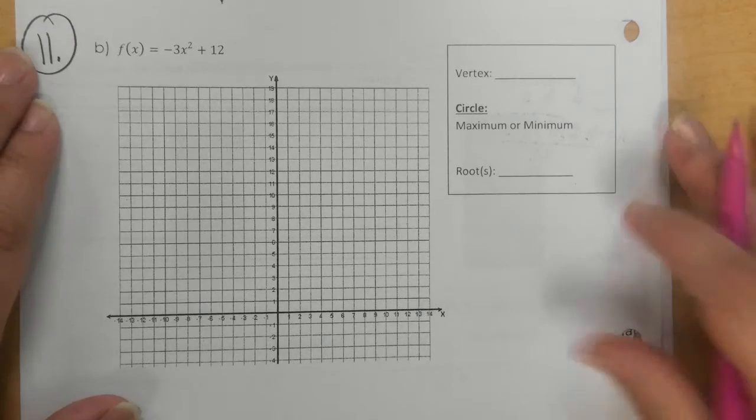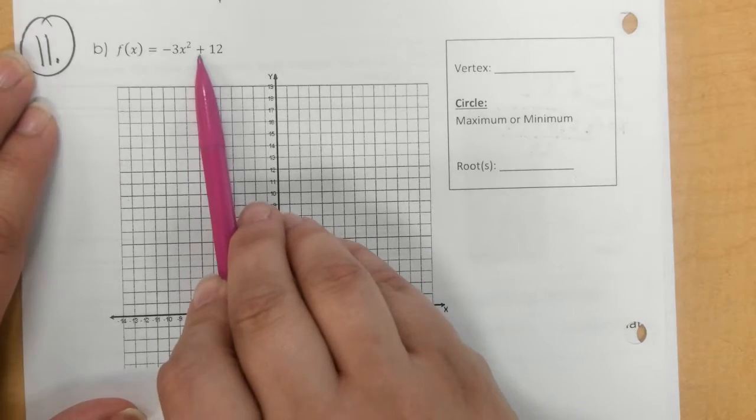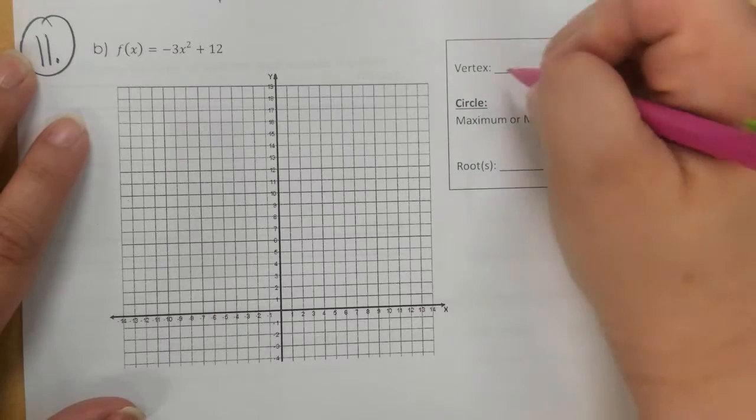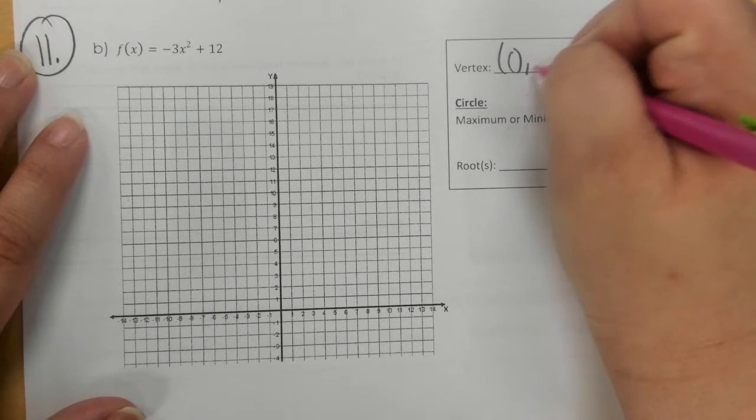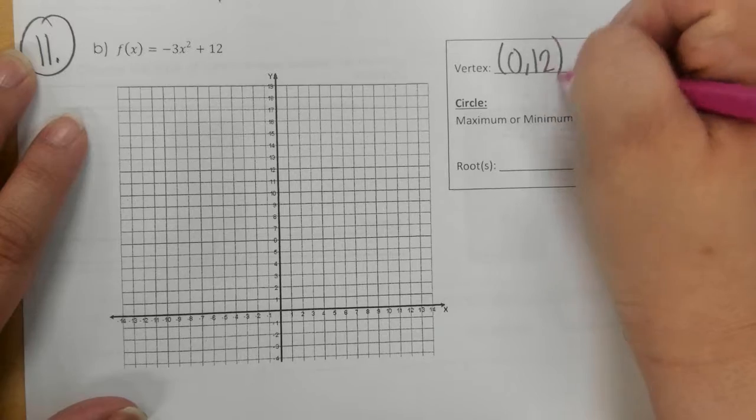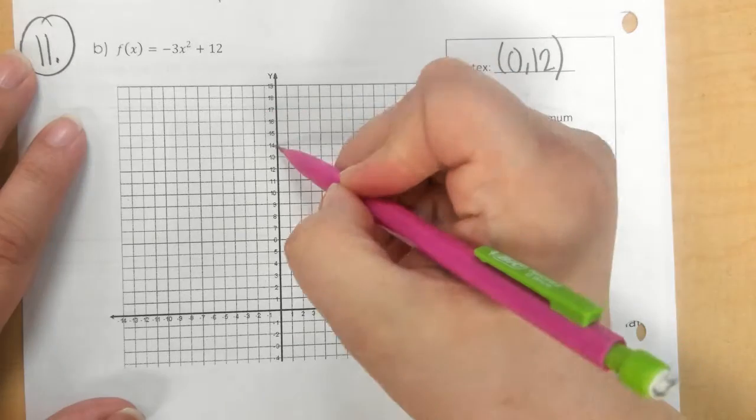For letter 11B, we notice that we do not have a B value in here. So the vertex is automatically 0, 12. We would start at 0, 12.